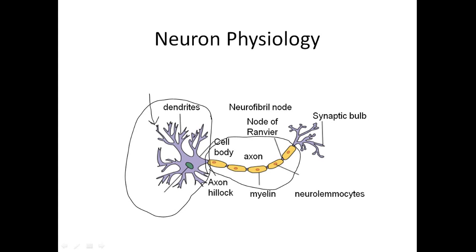This long part is the axon — that's how the signal is going to get transmitted down the neuron. At the base of the cell body, connecting the cell body and the axon, is the axon hillock, which is going to be an important structure when we talk about function.